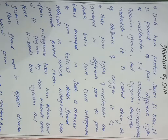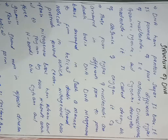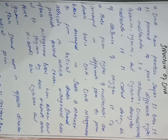Uracil is present only in RNA. DNA is called deoxyribonucleotide because it contains no oxygen on carbon number two of the sugar ring. That is why we call it deoxyribonucleotide. RNA is called ribonucleotide because it contains oxygen on that carbon.